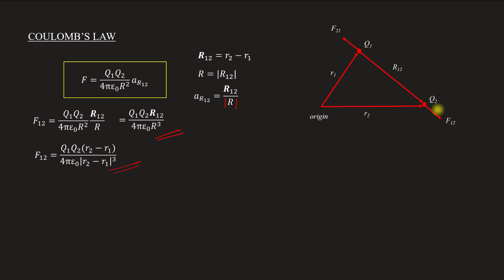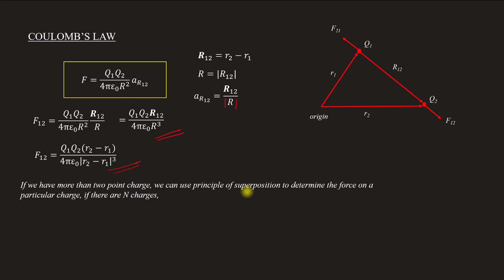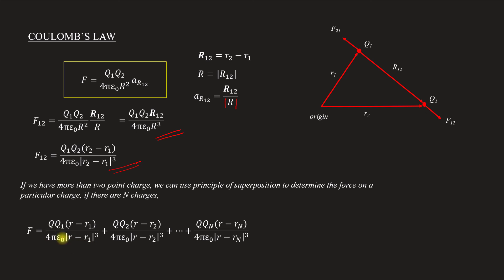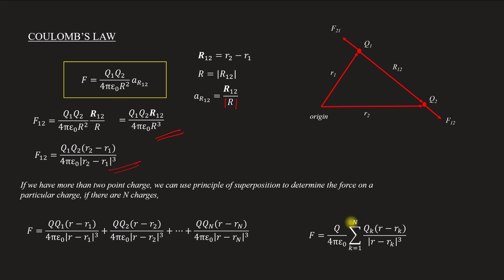If we have more than two charges, we can use the principle of superposition to determine the force on a particular charge. The general equation for force on charge Q1 due to n charges is F = Q over 4·pi·epsilon-naught times the summation from k=1 to n of Qk times (r − rk) divided by |r − rk| cubed. This is the general equation for Coulomb's law when we have multiple charges.